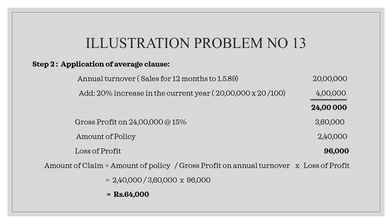Calculate the loss of profit and the claim to be made. Loss of profit is step one, and the average clause is step four. So if we look at this, the loss of profit total is 96,000.